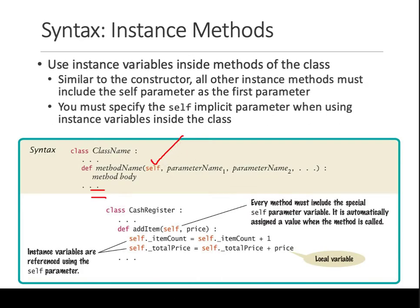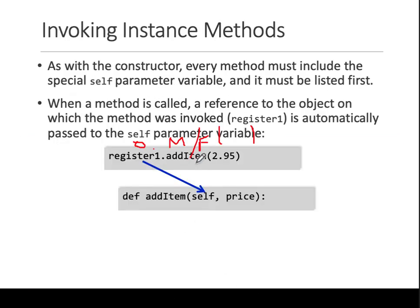When you define it you write self, but when you call the function you don't write self. Self by default will be called for this object.